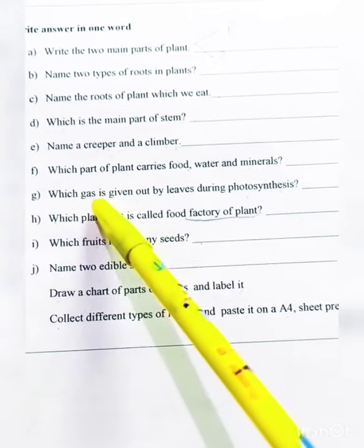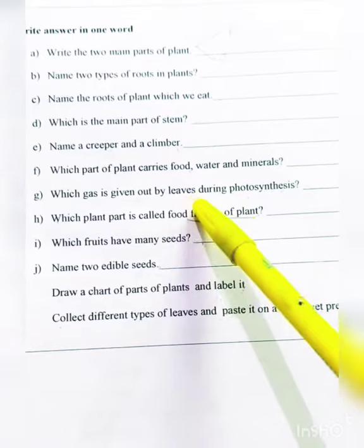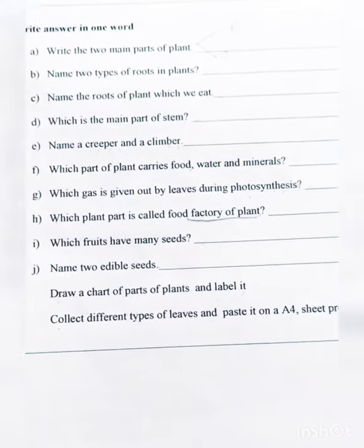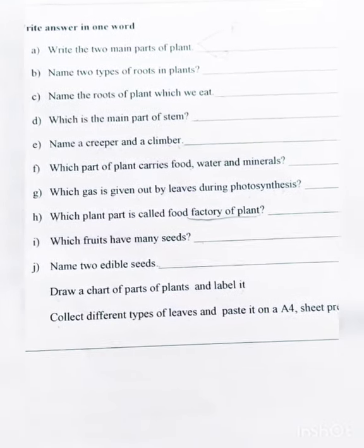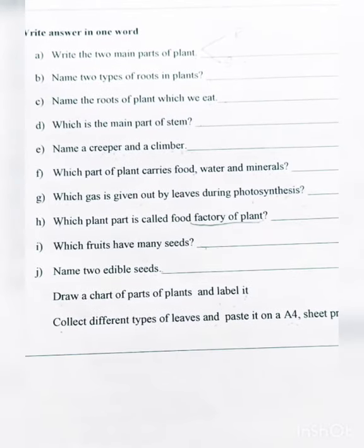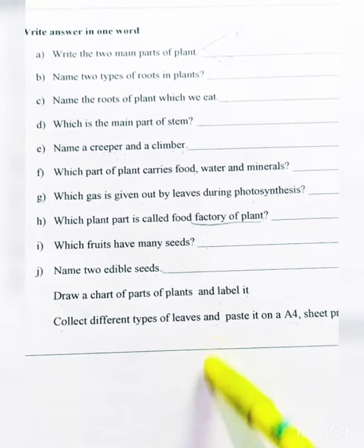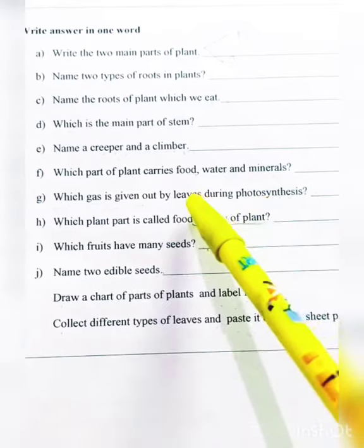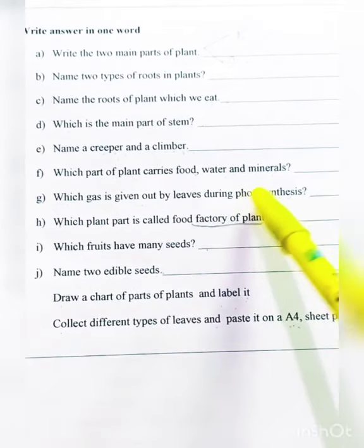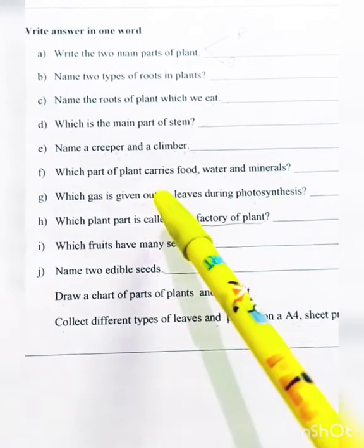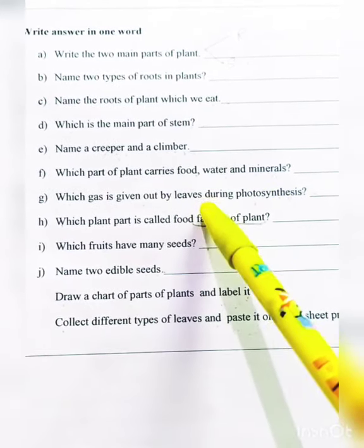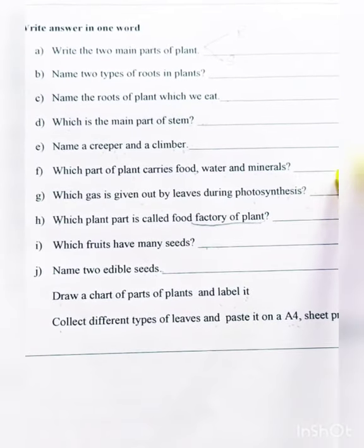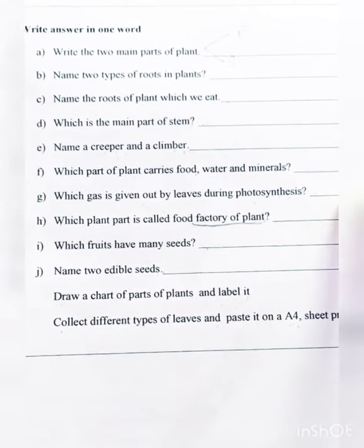Which gas is given by leaves during photosynthesis? When the photosynthesis process is done, oxygen is released as a by-product.